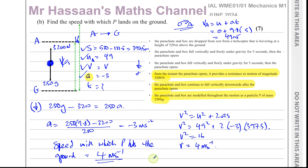Don't make the mistake of thinking the speed is zero because it stops when it hits the ground — that's the speed after impact. The speed at which it hits the ground is 4 m/s. The parcel slowed right down due to the parachute, decelerating before landing.